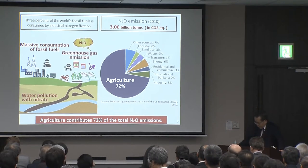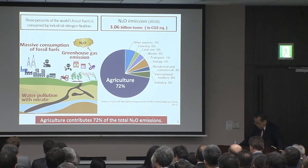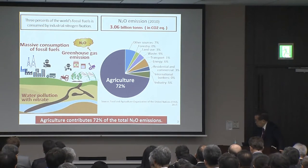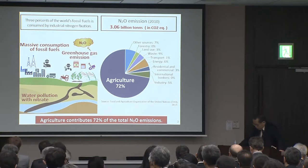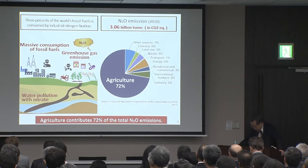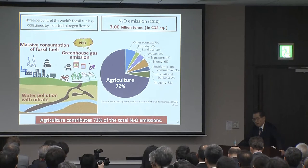Nitrous oxide, N2O, is an important greenhouse gas. The largest source of N2O is from agriculture, which represents more than 72 percent of the total anthropogenic N2O emissions. In plenary session 2 yesterday, Dr. Kitano also mentioned that nitrogen use exceeds the capacity of the earth.